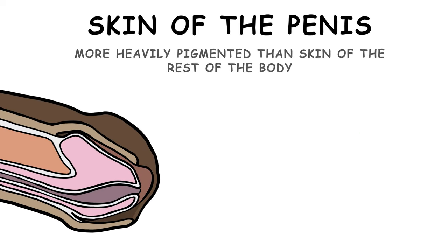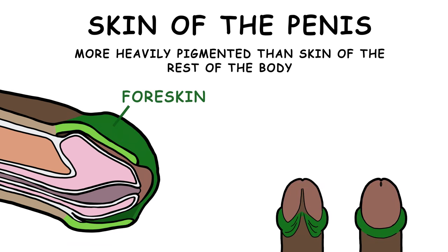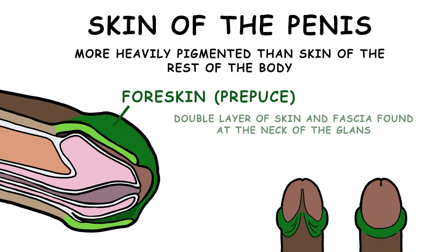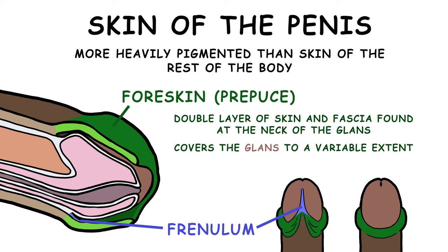The skin of the penis is more heavily pigmented than skin of the rest of the body. The foreskin, or prepuce, is a double layer of skin and fascia found at the neck of the glans. It is connected to the glans surface via the frenulum, this skinfold seen here. The foreskin covers the glans to a variable extent, and the space between the glans and foreskin is called the preputial sac.